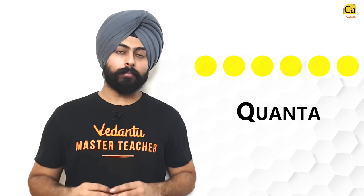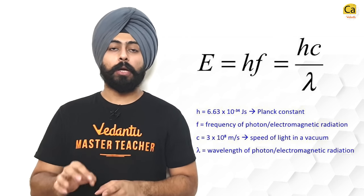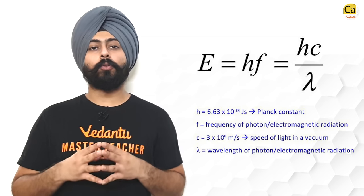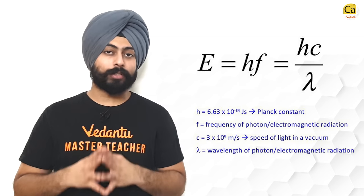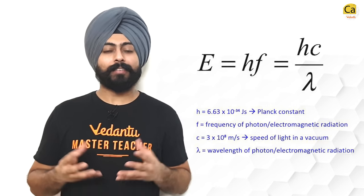These packets are known as quanta, singular quantum, multiple quanta. The energy contained in one quantum of light is equal to h times ν where h is the Planck's constant which is equal to 6.6 × 10⁻³⁴ joule seconds and ν is the frequency of light in question.